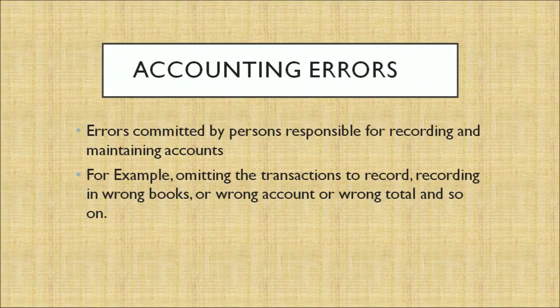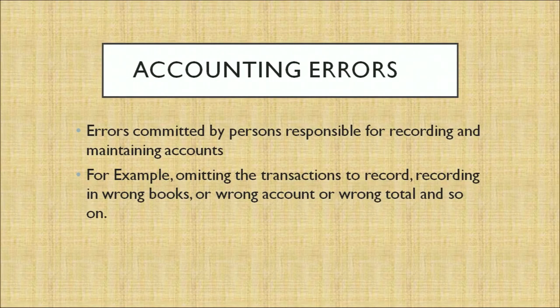So, what are accounting errors? Errors are committed by the person responsible for recording and maintaining accounts. There are accounts persons in every organization. Finance has ever been the backbone of any organization. Behind the strong success of an organization depends how well the finance is being maintained. While recording the accounting entries, accountants generally commit some errors — for example, omitting transactions, recording in the wrong books or wrong accounts, or wrong totals.